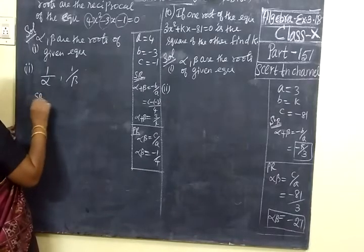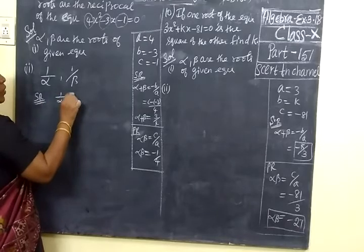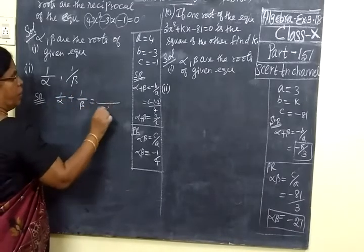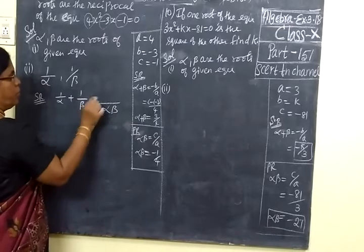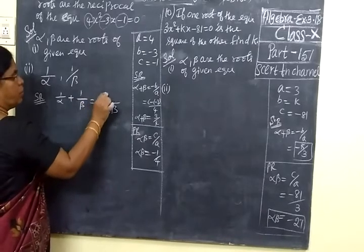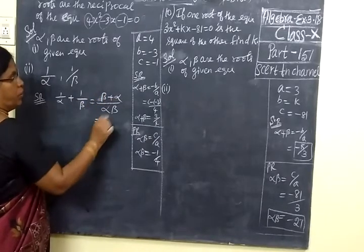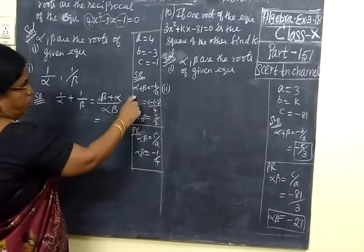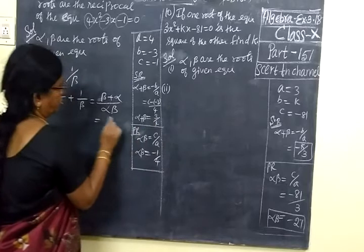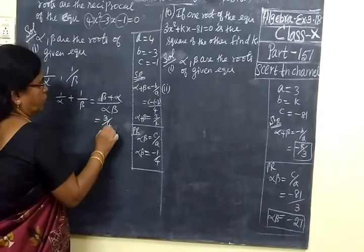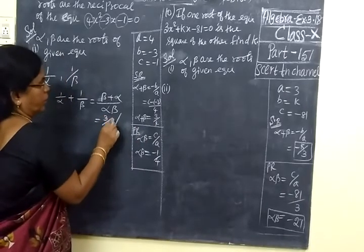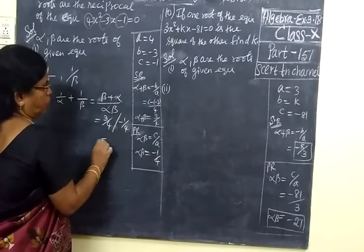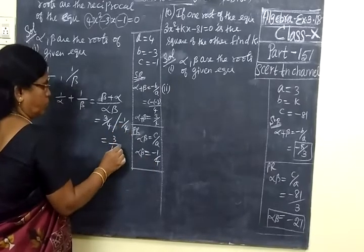SR is the sum of the roots: 1 by alpha plus 1 by beta. Cross multiplying gives beta plus alpha over alpha beta. Alpha plus beta equals 3 by 4, and alpha beta equals minus 1 by 4. So the sum of roots is 3 by 4 divided by minus 1 by 4, which gives minus 3.